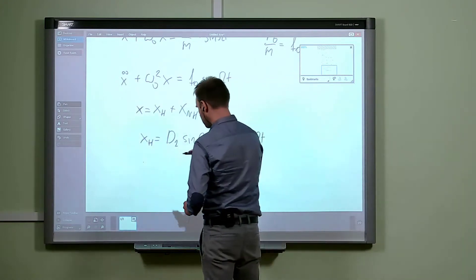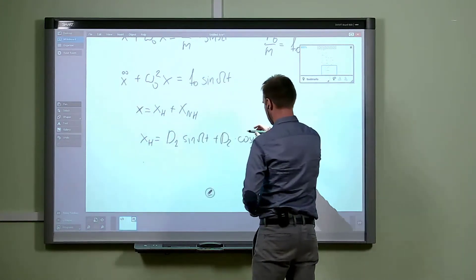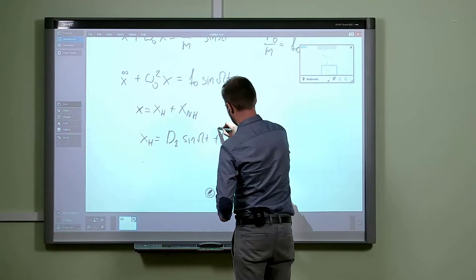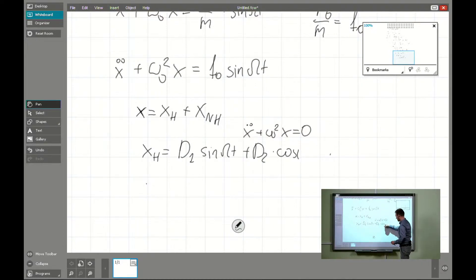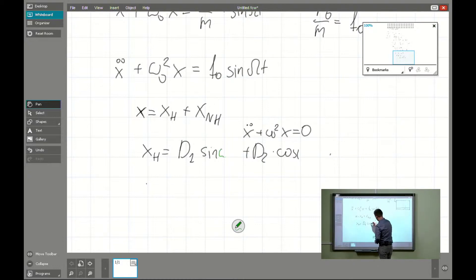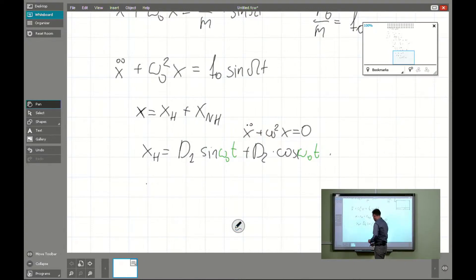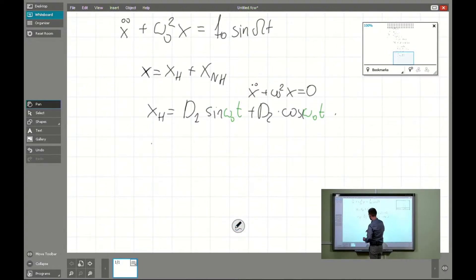The homogeneous part is the solution when the right-hand side is exactly zero. For that case we consider: x double prime plus omega zero squared times x equals zero. That is the homogeneous equation, with omega zero squared times t as the argument.